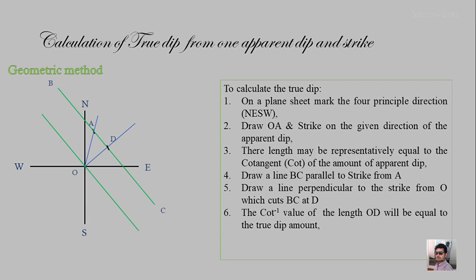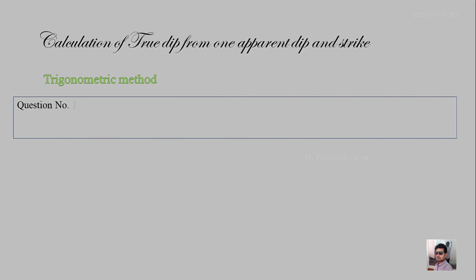The cot⁻¹ of OD gives the true dip amount, and the direction of OD is the true dip direction. This is how we calculate the true dip from one apparent dip and the strike value. For convenience, I will work through one example in the video, and we will try two more sums as homework.